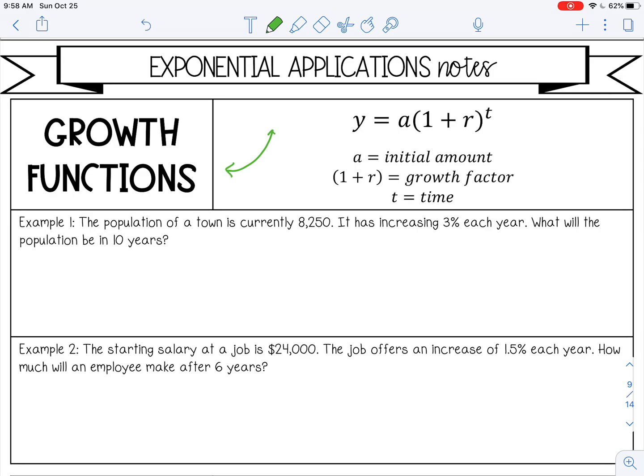There is a formula for growth functions: y equals a times parenthesis 1 plus r close parenthesis to the t power. So a means your initial amount, what you start with. 1 plus r is your growth factor, and I want you to make a note that r is usually a percentage. And then t is time.